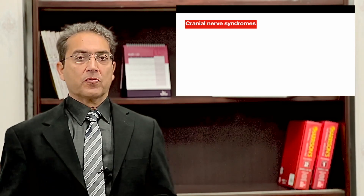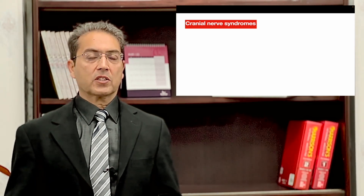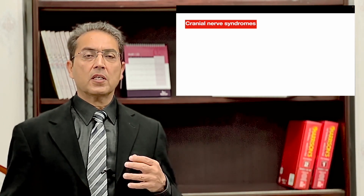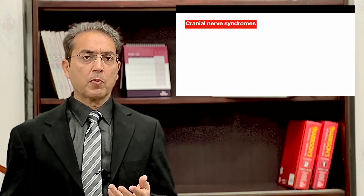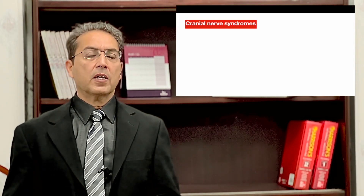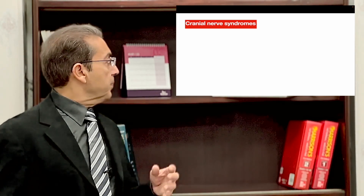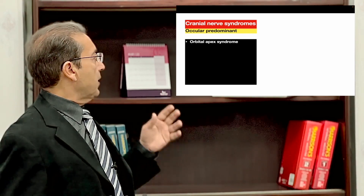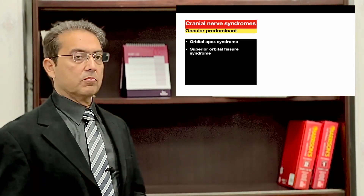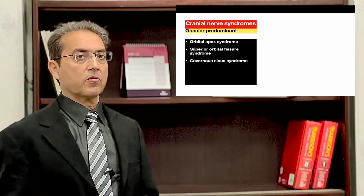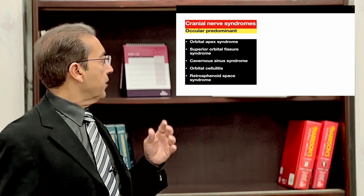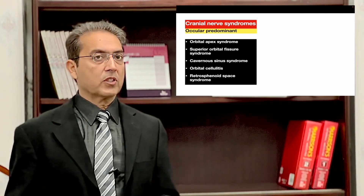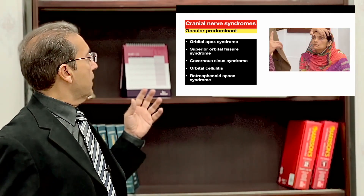We did a limited examination of the cranial nerves. We omitted the first cranial nerve because the patient had mucormycosis on the left side of the nose, which would compromise that examination. We omitted the ninth, eleventh, and twelfth cranial nerves as these are probably not going to give us information about the lesion location. We see a cranial nerve syndrome because predominantly the left eye is involved. These cranial nerve syndromes may be: orbital apex syndrome, superior orbital fissure syndrome, cavernous sinus syndrome, orbital cellulitis, and the retrosphenoid space syndrome.